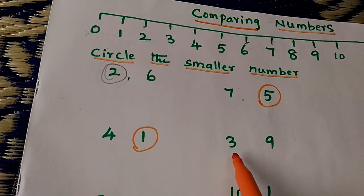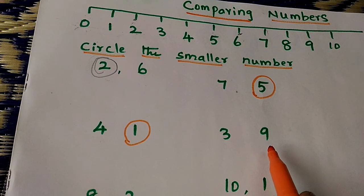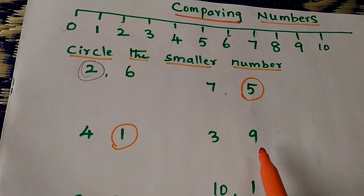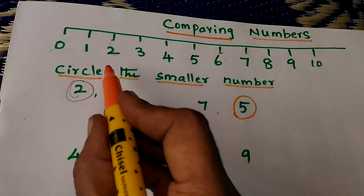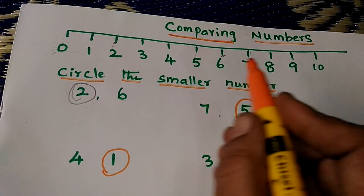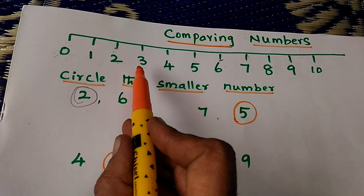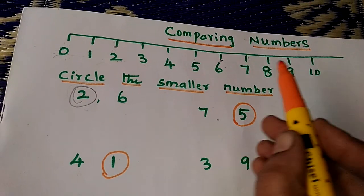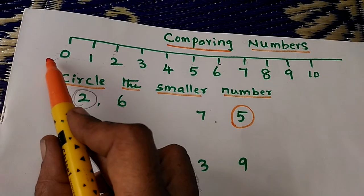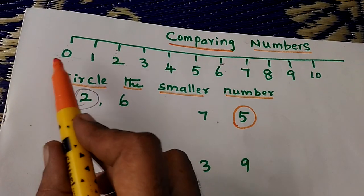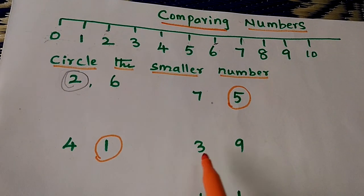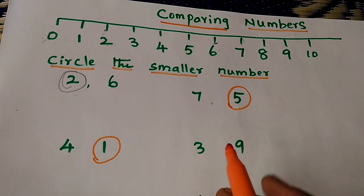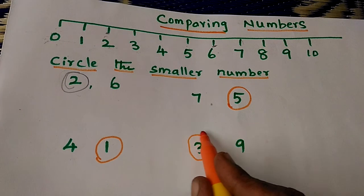Then we have 3 and 9. Which one is the smaller number — 3 or 9? Where is 3 here? Find out. Where is 9? Here. 3 is closer to 0, so 3 is smaller than 9. 3 is the small number. Circle this.